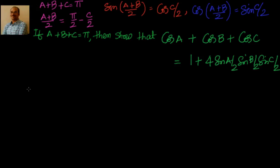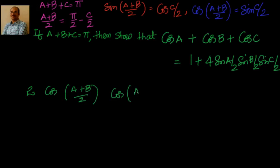So, cos a plus cos b is nothing but equal to 2 cos((a+b)/2) cos((a-b)/2) plus cos c. Cos c I can write as 1 minus 2 sin²(c/2), or you can write it as 2 cos²(c/2) minus 1.